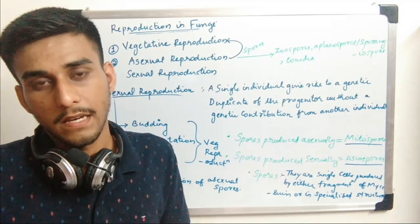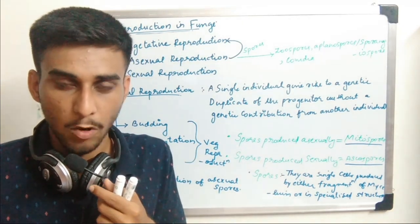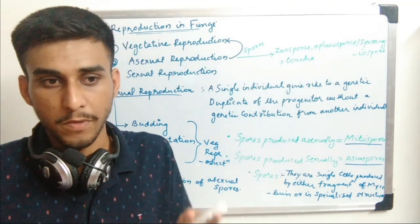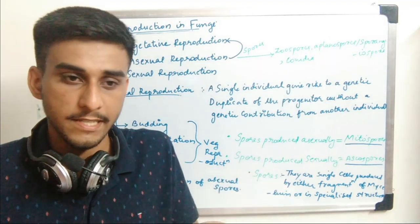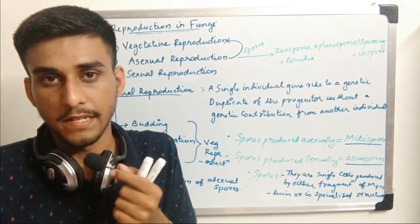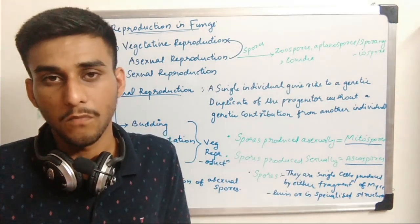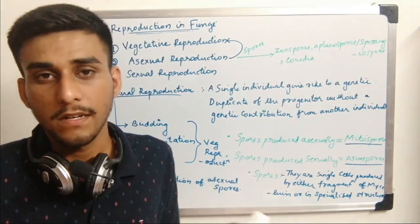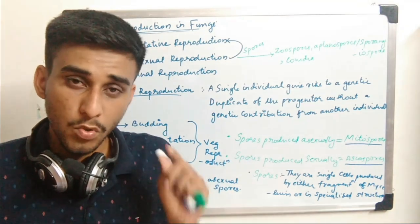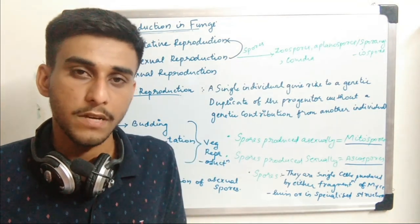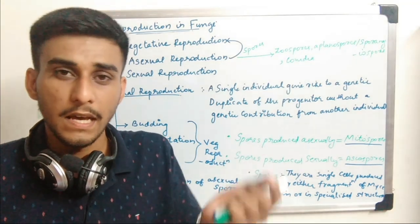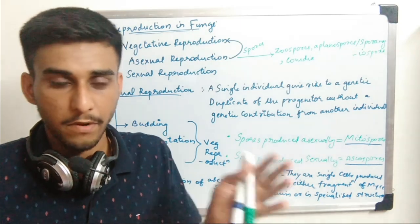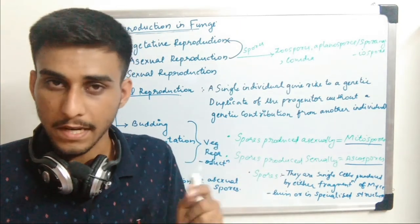Favorable climatic conditions for fungi include optimal humidity — the substrate should be moist — and a warm temperature within 20 to 30 degrees Celsius. During this type of favorable condition, fungi reproduce asexually.